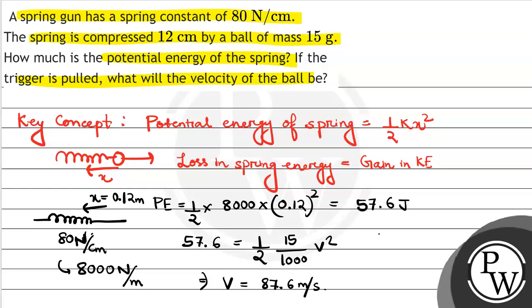So our answer is 57.6 joules and 87.6 meters per second. Hope you understood well, best of luck, thank you.